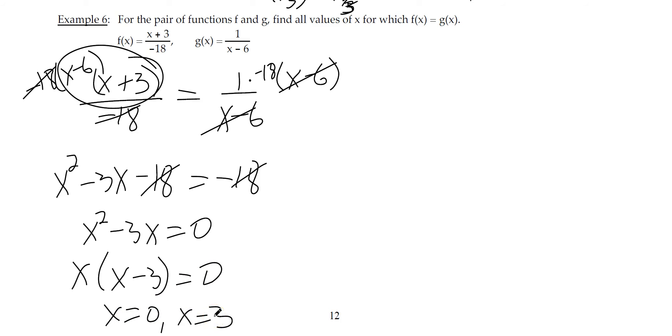Now, if we look up at the original, x cannot equal 6. That's really the only domain issue. And we didn't get one of those. So we have our two answers. And is f of 0 really equal to g of 0? We plug in 0 into f, and we get 3 over negative 18. We plug 0 into g, and we get 1 over negative 6. And you can see that those are equivalent. And same with 3. You can plug 3 in and verify. That completes this lesson review. Thank you.